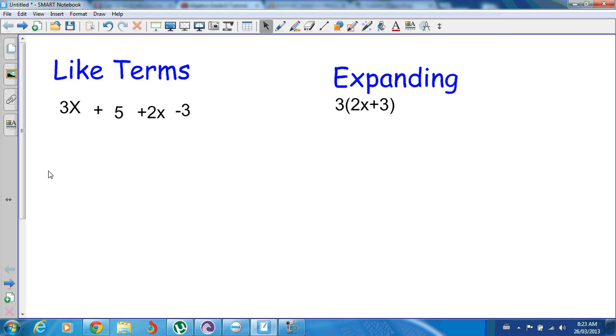So, I've got three x's and I've got a positive two more. So if I put them together, three x's and two x's together makes five x's.